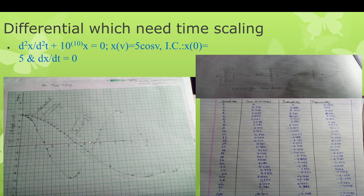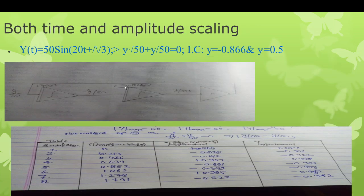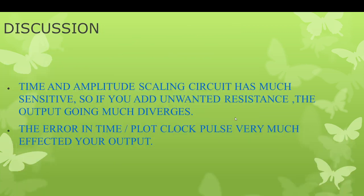For amplitude scaling, the mathematical result shows a damped response, but experimentally there is a large variation — the amplitude scaling result is very poor. The reason is that the time and amplitude scaling circuit has significant stray capacitance. Adding unwanted resistance causes the output to diverge substantially. The clock process greatly affects output, and the op-amps inside the computer are not very clean internally, giving large variations in sensitive scaling cases.